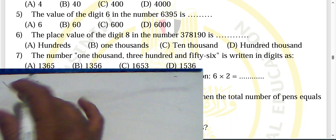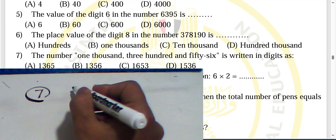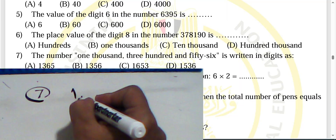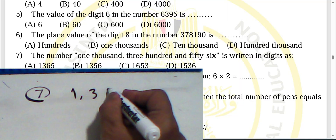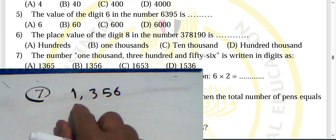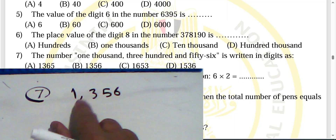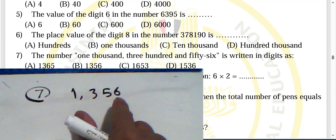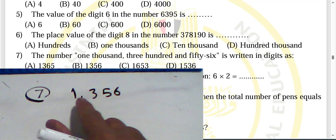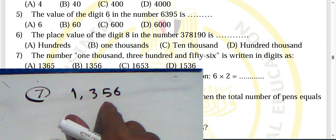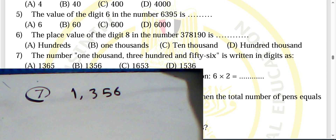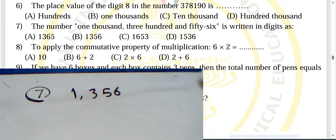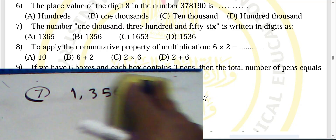Question seven: the number one thousand three hundred fifty-six. Choose letter B.